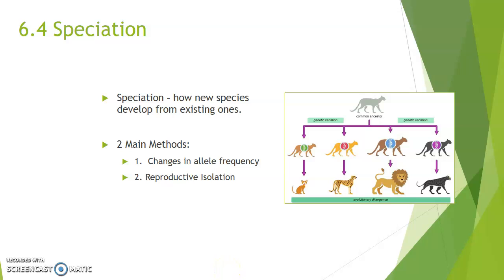Hello biology buckaroos. Today we're doing 6.4 speciation. We've been talking about natural selection, which is how species change over time. We talked on Tuesday about the Hardy-Weinberg equilibrium — the conditions required to keep a species from evolving. We also looked at how we can determine allele frequencies based on percentages of homozygous recessive individuals in a population, and we did a lot of math. But we're done with that part — no more math.